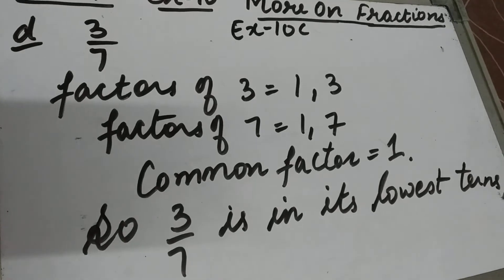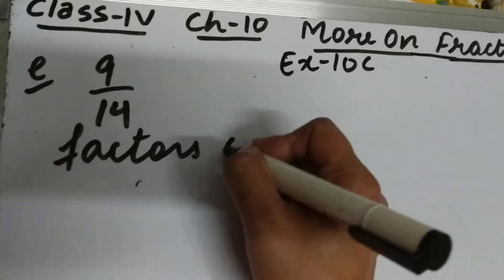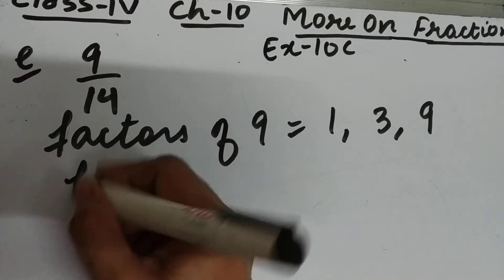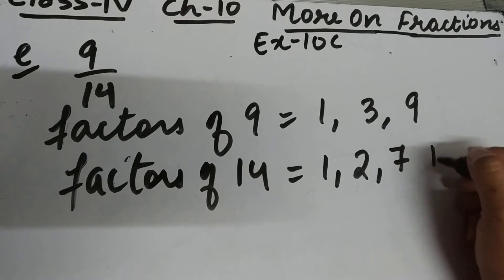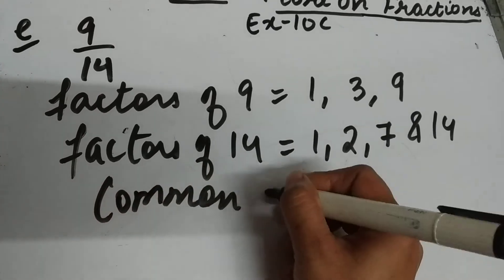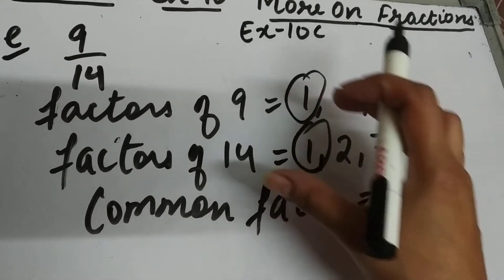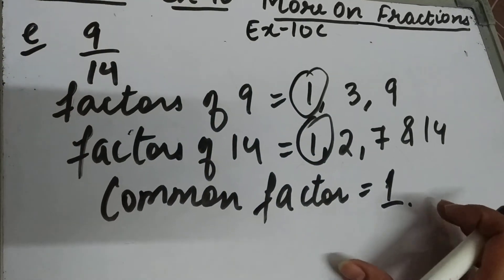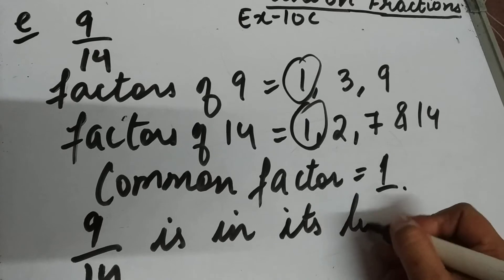Part e is 9 upon 14. Factors of 9 are 1, 3, and 9. Factors of 14 are 1, 2, 7, and 14. Comparing the factors, only 1 is common to both 9 and 14. So the common factor between the numerator and denominator is only 1, meaning 9 by 14 is in its lowest terms. We cannot reduce it further.